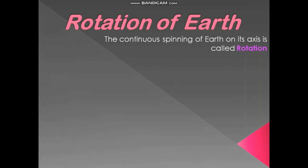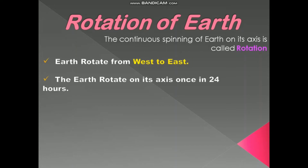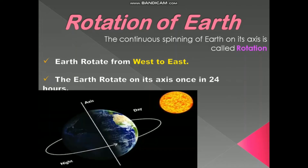The continuous spinning of the earth on its axis is called its rotation. It rotates from west to east. The earth rotates on its axis once in 24 hours. This period of the earth's rotation is called the earth day. It refers to the daily motion of the earth on its axis.